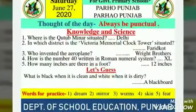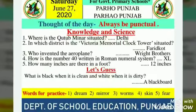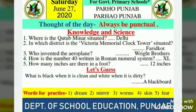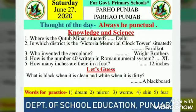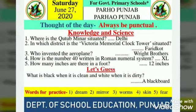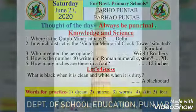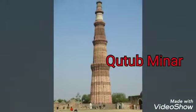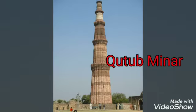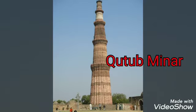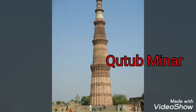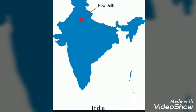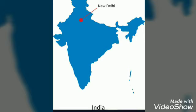Now the first question: where is the Qutub Minar situated? The answer is Delhi. Qutub Minar is situated in Delhi and was started by Qutub-ud-din Aibak. It is a 73-metre high tower and it is a UNESCO World Heritage Site.